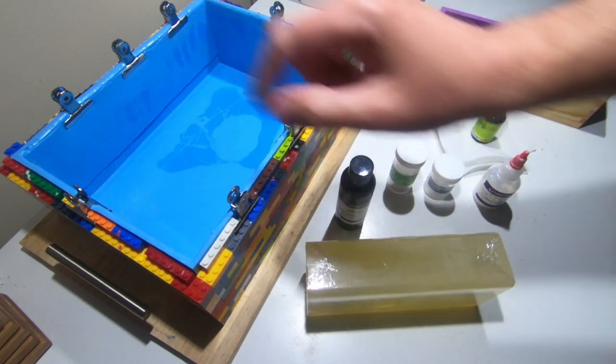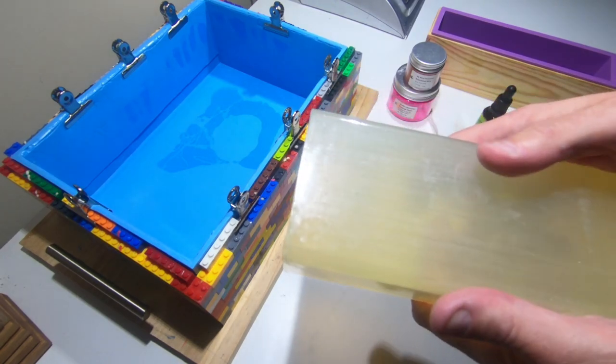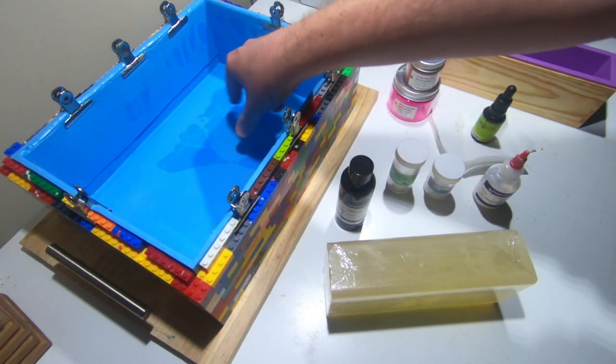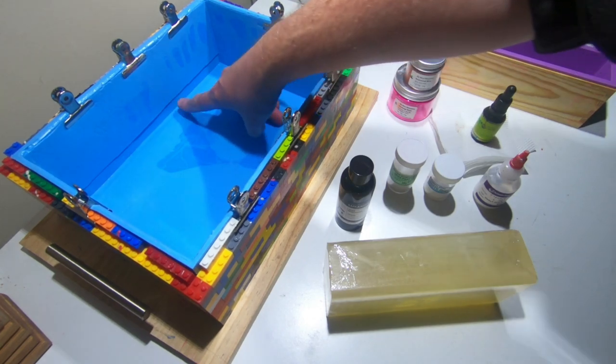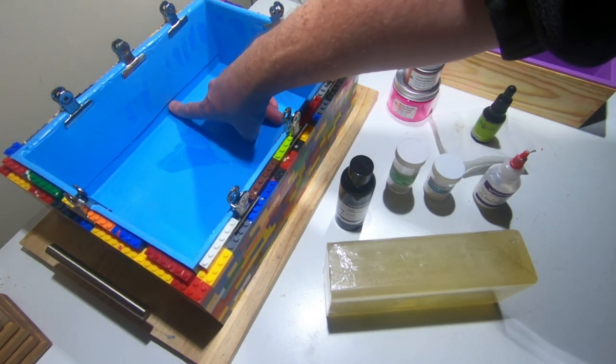Now once that's completed I'm only going to use 500 grams so half of this block is going to go into the mold. It's only going to go up to probably where that line is there, maybe less than that.